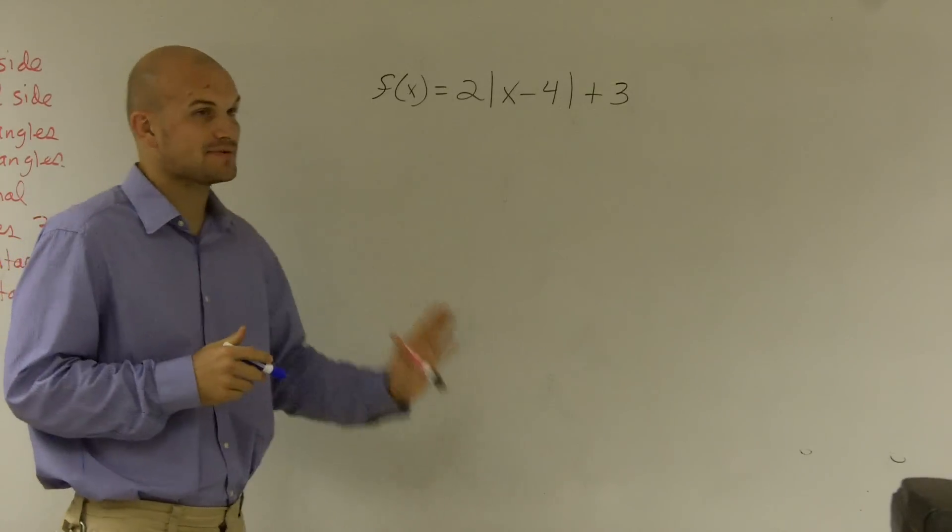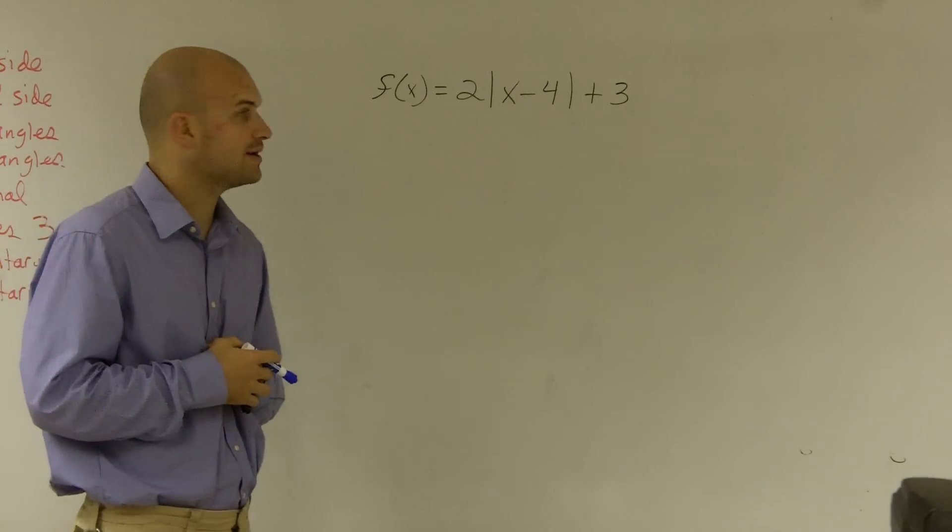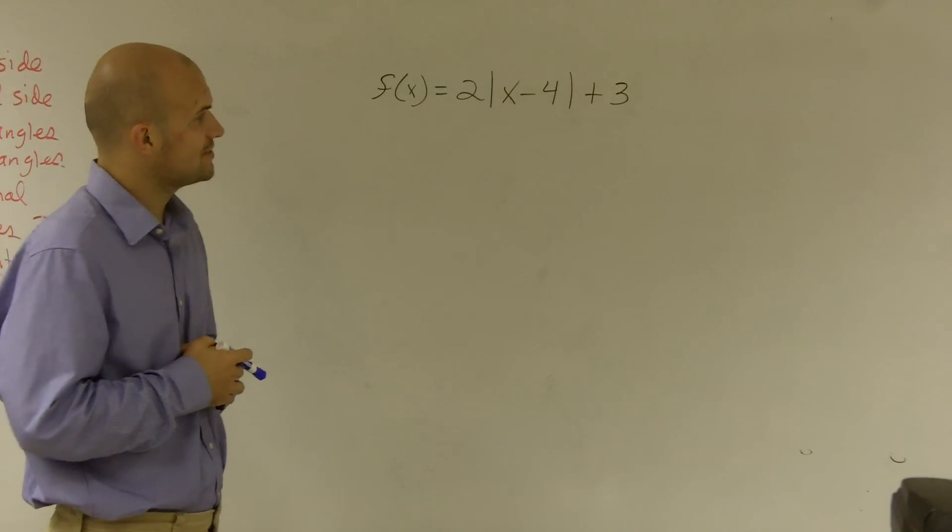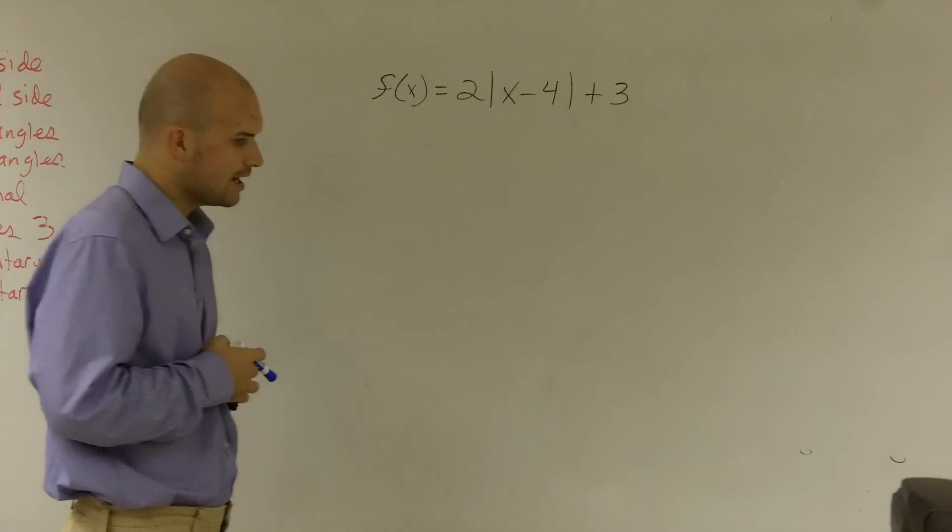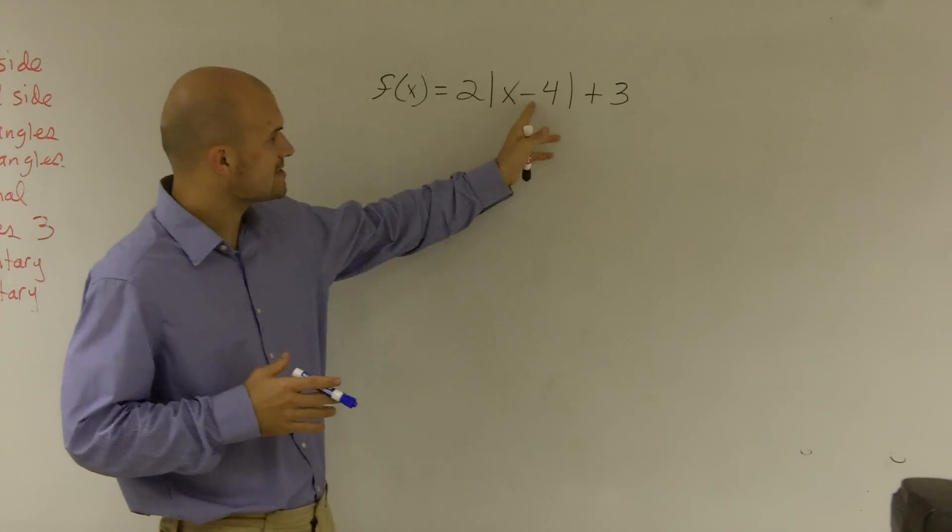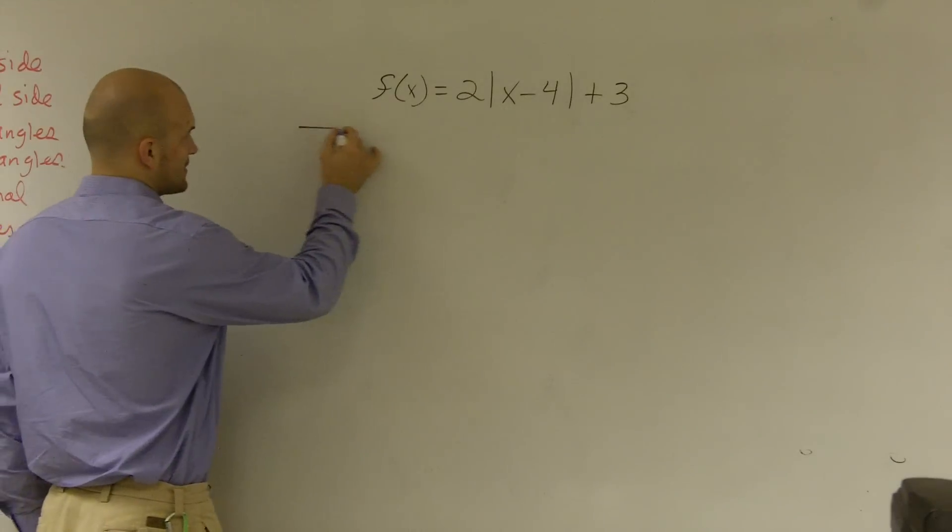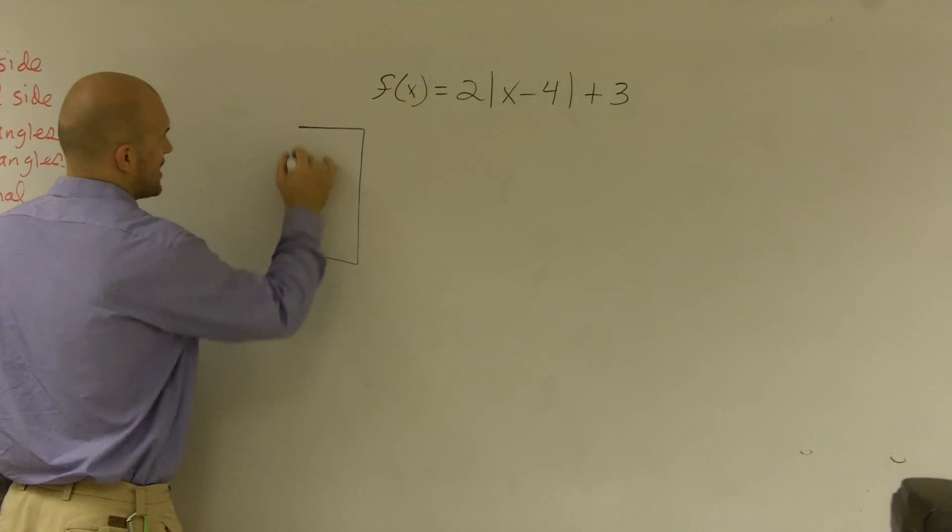Well, when given an absolute value equation, that can be pretty difficult depending on what points you pick. If you guys look at this, this graph, okay, has an x minus 4 plus 3 and 2. So let's pretend I was going to use the table method. And let's say I was just going to graph this.